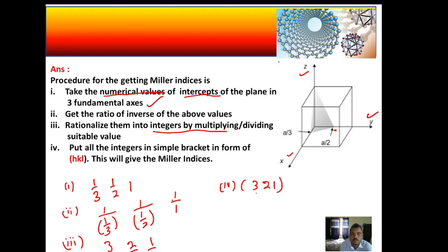This is the Miller indices of the shaded plane. So this plane can be indexed as (3 2 1).